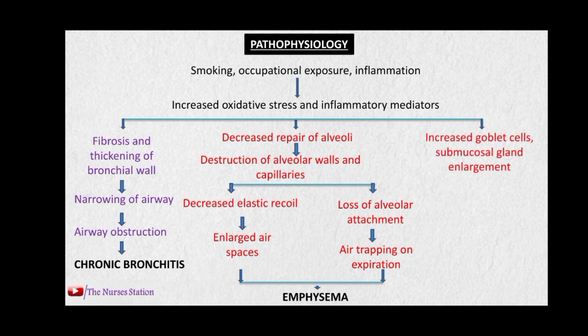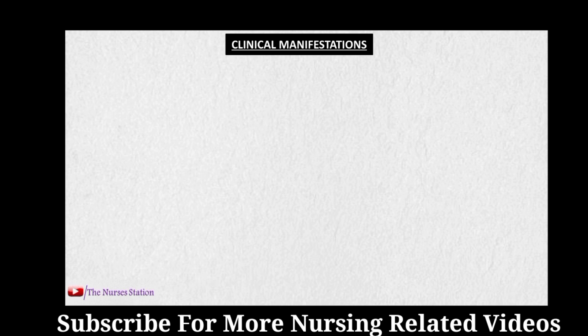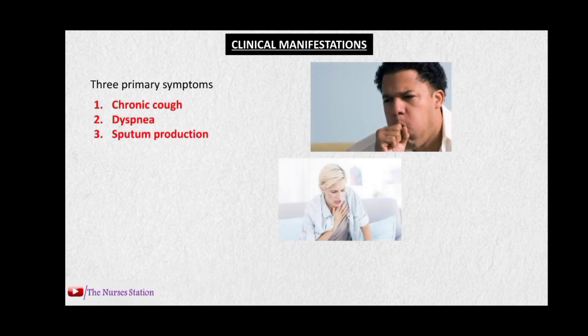The number of goblet cells, which produce mucus, increases, and there is also enlargement of the submucosal glands in the airways. This causes mucus hypersecretion and ciliary dysfunction. Excess mucus is produced and the cilia present in the airways do not function properly, leading to pooling of sputum, which can contribute to the occurrence of chronic lung infections.